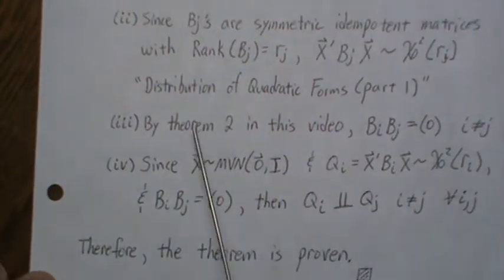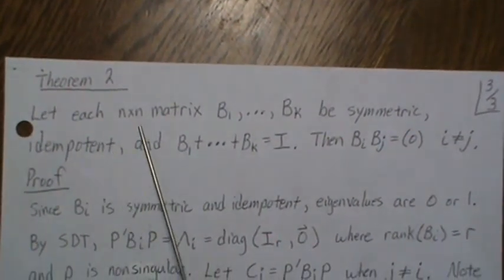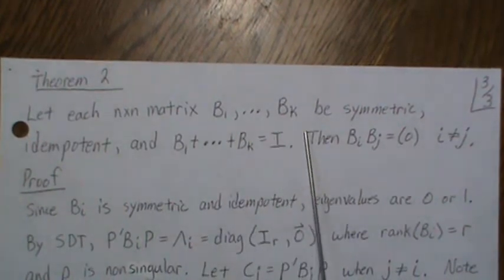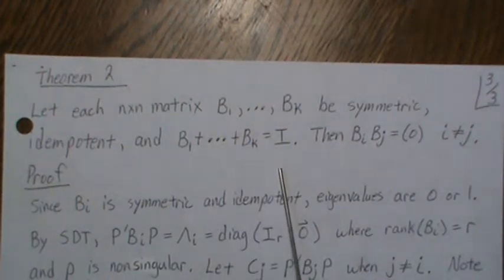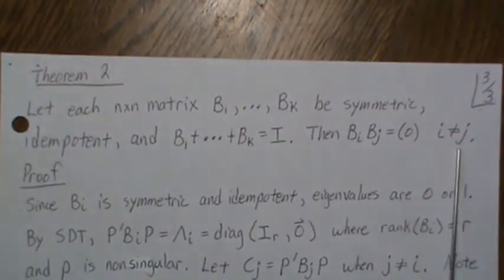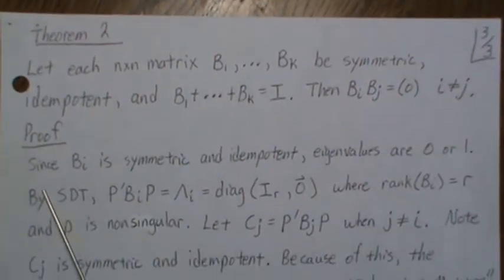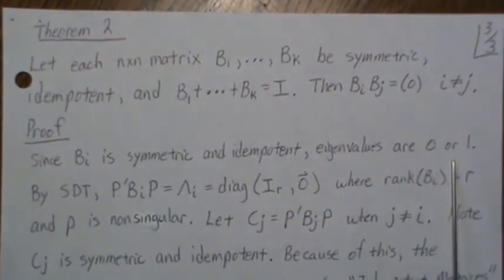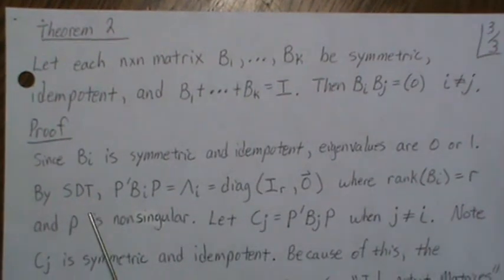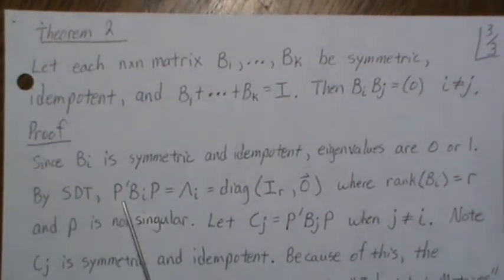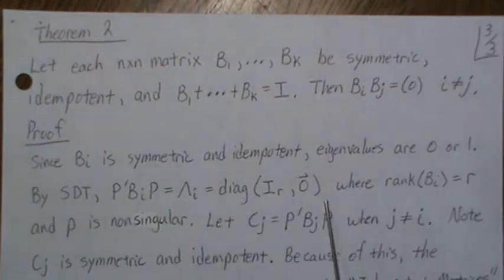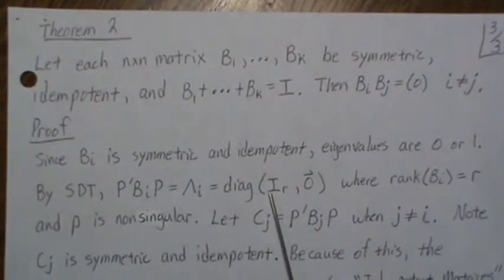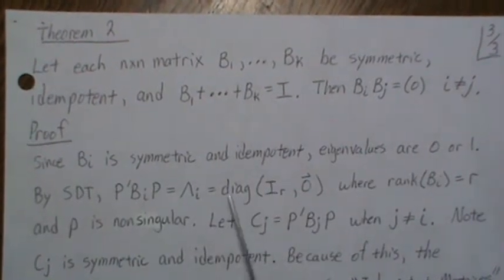Now let's prove Theorem 2. Let each n-by-n matrix B1 through BK be symmetric and idempotent, with their sum equal to I — as in the first theorem. We want to show the products Bi * Bj equal zero for all i ≠ j. Since the Bi's are symmetric and idempotent, the eigenvalues are zeros and ones. By the spectral decomposition theorem, we can find a matrix P such that P' * Bi * P equals LambdaI — a diagonal matrix with Ri ones and zeros elsewhere.